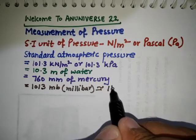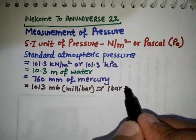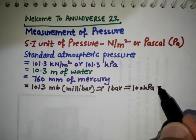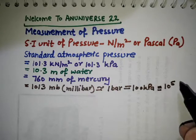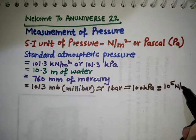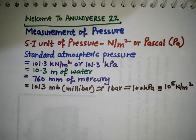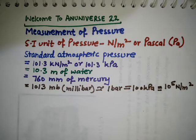One bar is equal to 100 kilo Pascal, that is 10 raised to power 5 Newton per meter square. When the local atmospheric pressure is not given in a problem, we generally take it as 100 kilo Newton per meter square or 10 meter of water for simplicity of calculations.